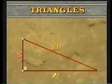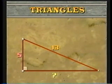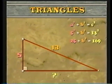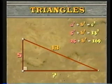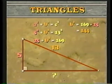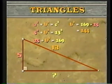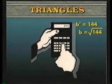Here's another example. Given a right triangle whose hypotenuse is 13 and one of whose legs is 5, how long is the other leg? A squared plus B squared equals C squared. Substituting, we have that 5 squared plus B squared equals 13 squared. 25 plus B squared equals 169. So B squared equals 169 minus 25, which equals 144. Then B equals the square root of 144. With a calculator, we key in 144 and then the square root symbol to get the answer of 12.